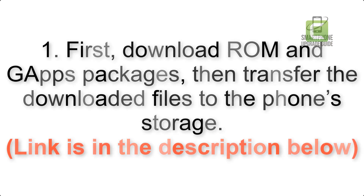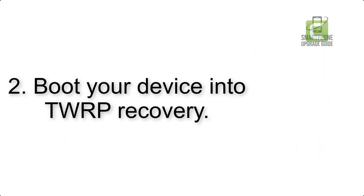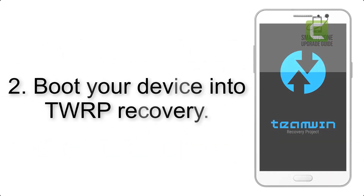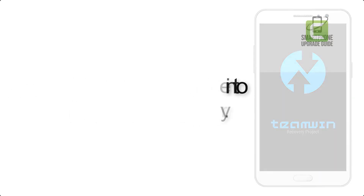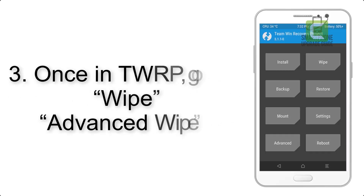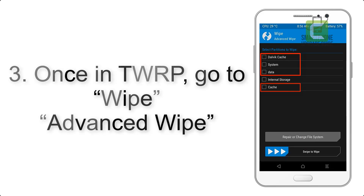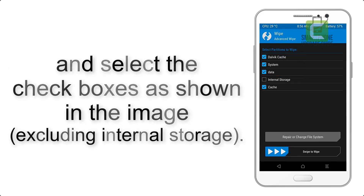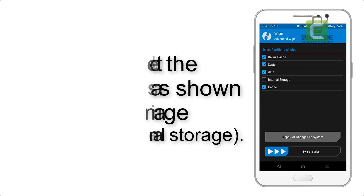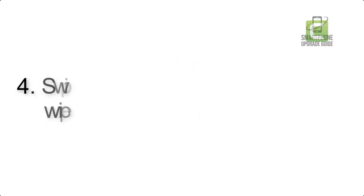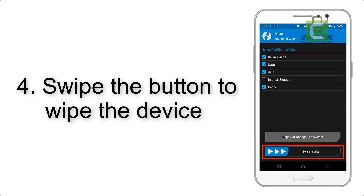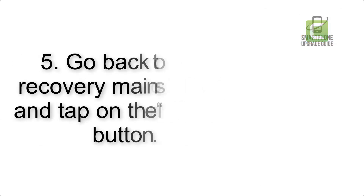The link is in the description below. Step 2: boot your device into TWRP recovery. Once in TWRP, click on Wipe, then Advanced Wipe, and select the checkboxes as shown in the image, excluding internal storage. Step 4: swipe the button to wipe the device.